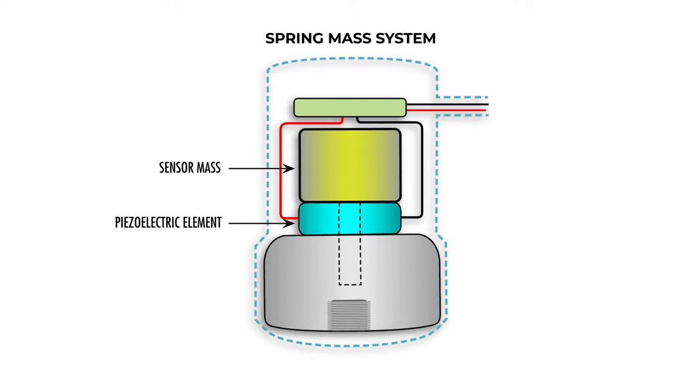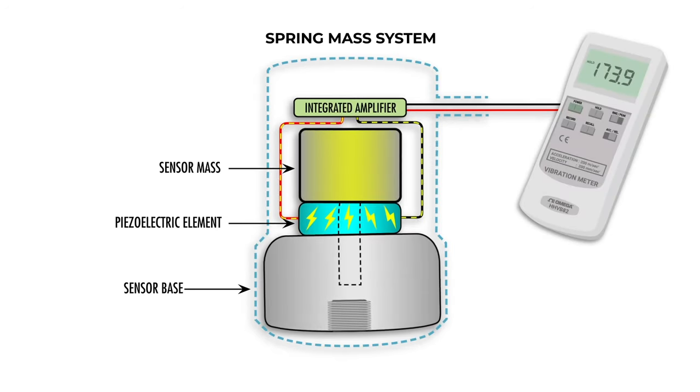When vibration is applied to the system through the base, the mass produces an alternating force on the piezo element, which produces an electrical charge proportional to the vibration velocity and frequency. An integrated amplifier converts the charge into a usable voltage signal that can be read by a vibration meter.